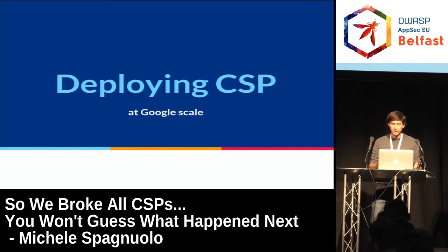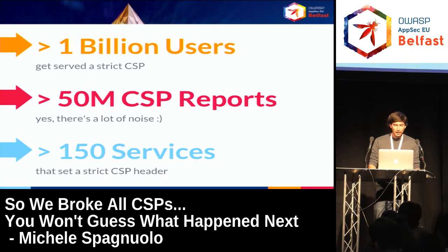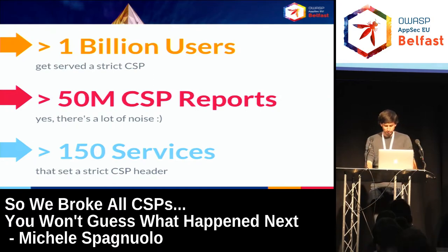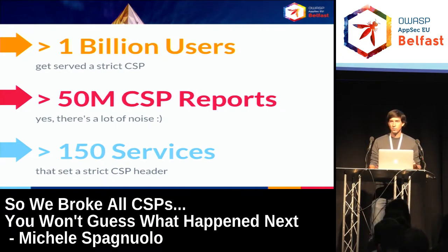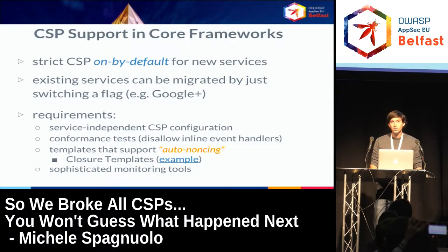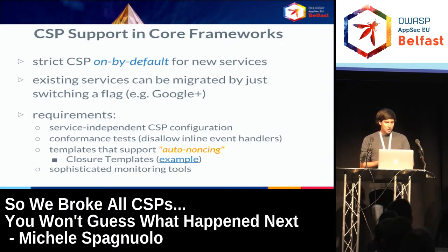Nowadays about a billion users are served a strict CSP — over 150 services have the strict CSP header — and we get over 50 million CSP reports per day. Most of that is noise, and I'll talk about how we deal with it. Bigger products like Google Photos, Google+, and passwords at google.com now have a strict CSP.